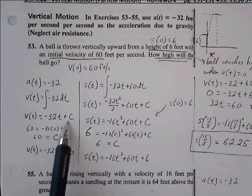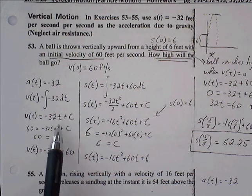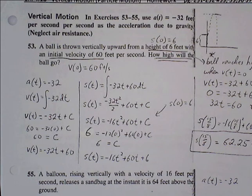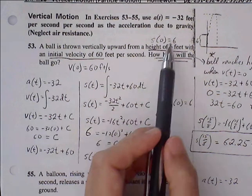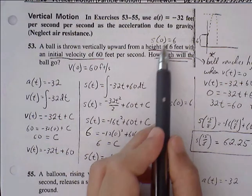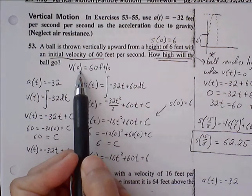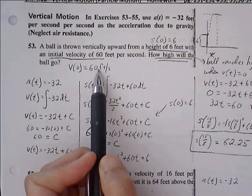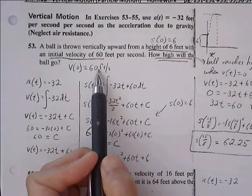So our general velocity equation is negative 32t plus C. However, we are given some information about velocity. We know V(0) is 60, so if I replace t with 0, I can solve for C. So 0 plugs in for time.